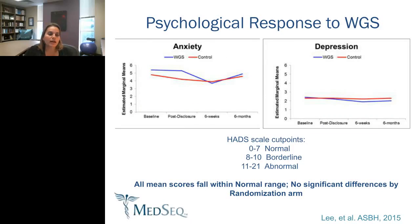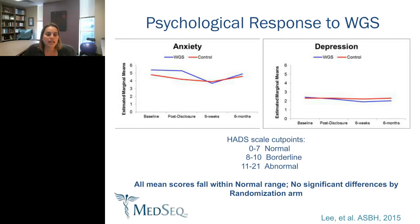We're also looking at the psychological impact of whole genome sequencing on individuals in primary care and cardiomyopathy settings in the MedSeq study — the first randomized study examining this for both ostensibly healthy individuals and those with a particular disease phenotype. Our preliminary data shows no significant difference between the control group and individuals who received whole genome sequencing in levels of anxiety or depression from baseline to six months post-disclosure. Even at baseline, all anxiety and depression scores fall within the normal range of zero to seven on our scale, and they don't significantly increase or decrease based on randomization.